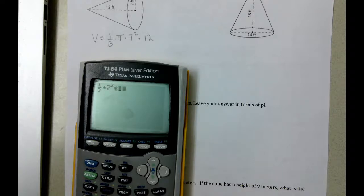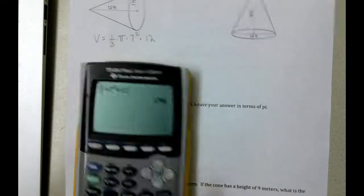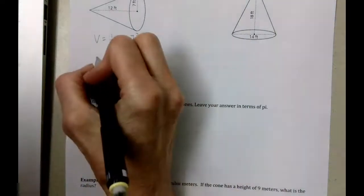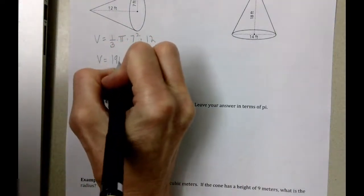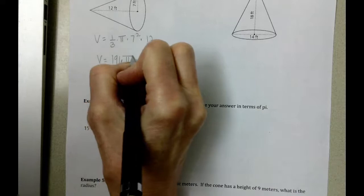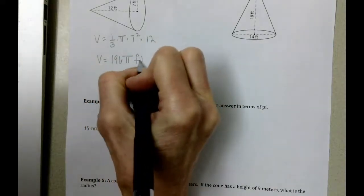Squared times 12, and that gives us 196. Remember we left our answer in terms of pi, and then our units are feet cubed.